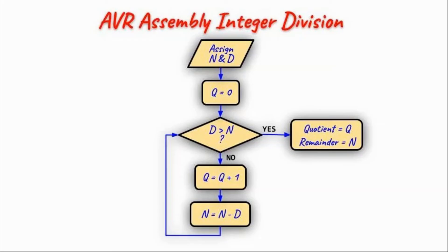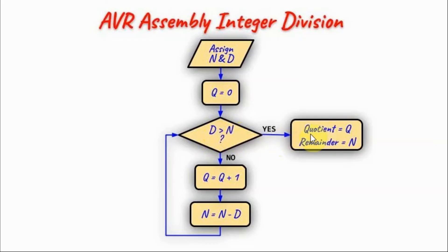In AVR assembly there is no specific instruction to perform integer division, but we can do it using multiple subtract operations. This flowchart demonstrates the process: first, assign values to the numerator and denominator, then initialize the quotient to zero. Check if the denominator is greater than the numerator; if not, increment the quotient by one and subtract the denominator from the numerator to get the new numerator. Continue until the denominator is greater than the numerator. When we exit the loop, the quotient is the final value of q and the remainder is the final value of n.